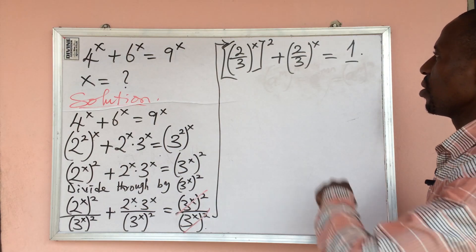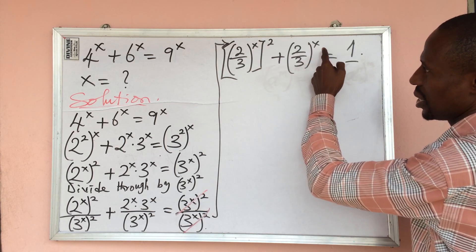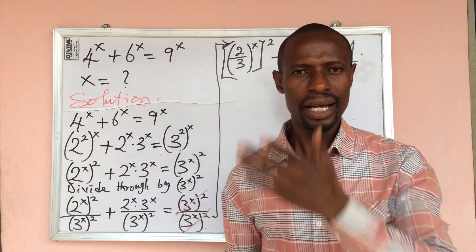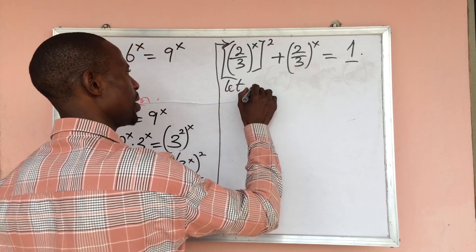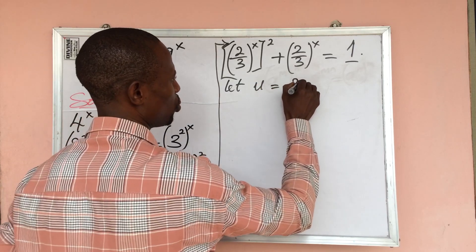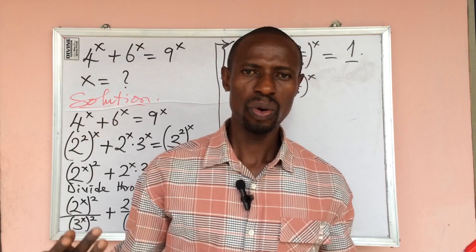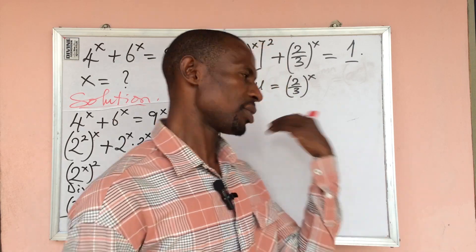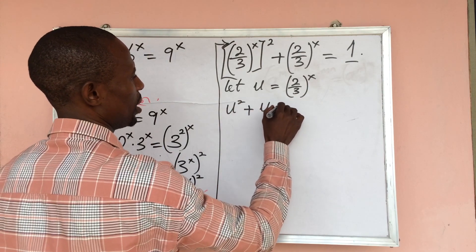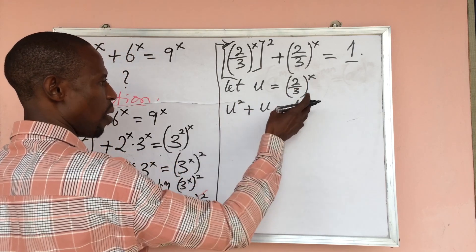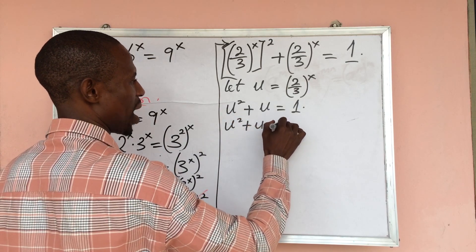Looking carefully, the expression inside the inner bracket is the same as the outer term — both are 2 over 3 to the power of x. We introduce a substitution: let u equal 2 over 3, all to the power of x. Wherever we see that expression, we replace it with u. This gives us u squared plus u equals 1, or rearranging: u squared plus u minus 1 equals 0.